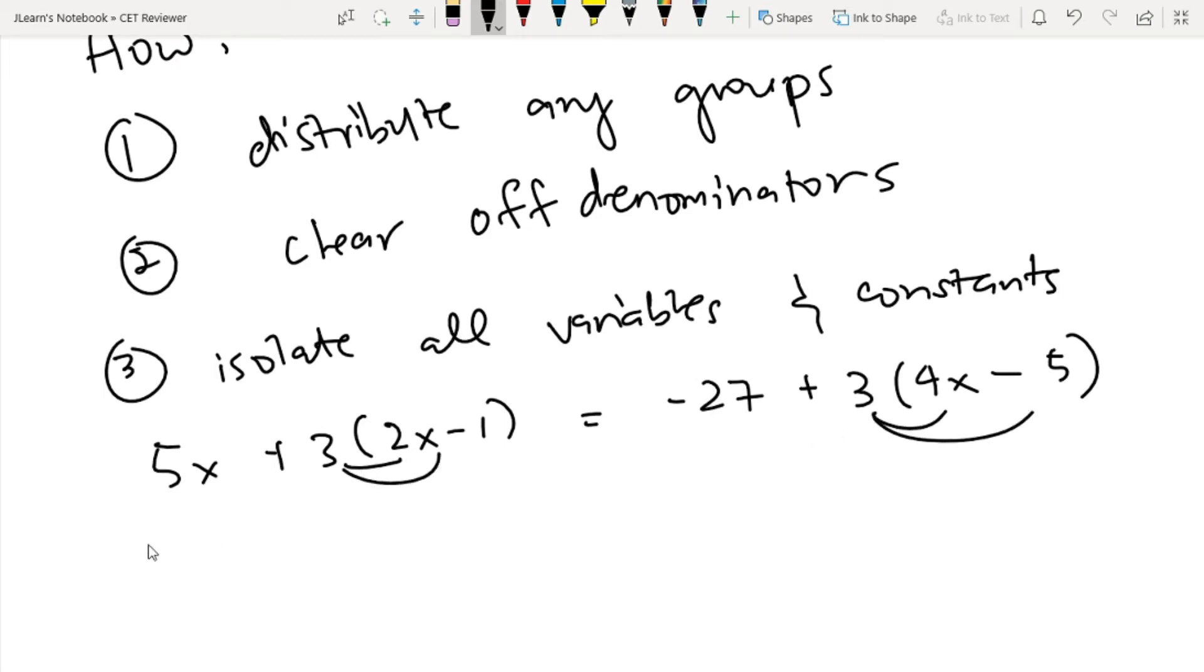That will be 5X plus 3 times 2X will be 6X, 3 times negative 1, that will be minus 3, is equal to negative 27 plus 3 times 4X, that will be 12X minus 3 times minus 5, that will be minus 15. Second is we clear off denominators. We don't have fractions here, so that's okay.